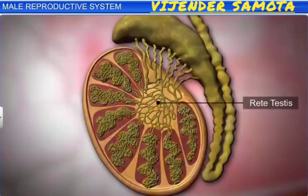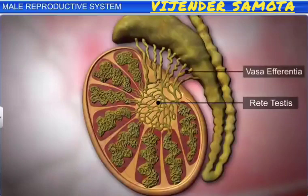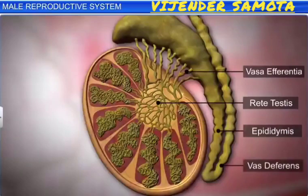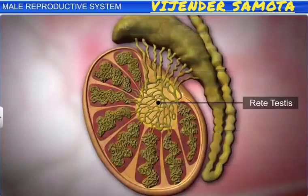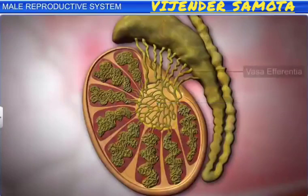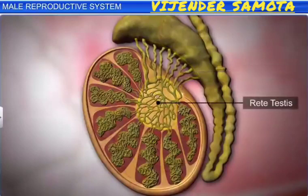Rete testis, vasa efferentia, epididymis, and vas deferens are the male accessory ducts. The rete testis is a network of ductules formed by the seminiferous tubules. Vasa efferentia are ciliated ductules that arise from the rete testis. They collect sperms and transfer them to the epididymis.